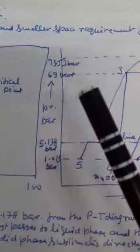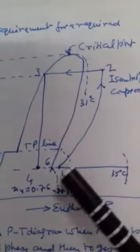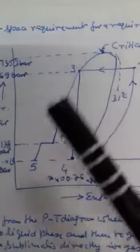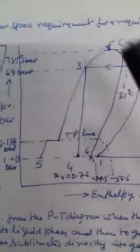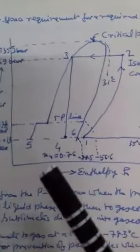See the curve: 4 is this one, 5 is this one. So this is the graph between pressure and enthalpy for CO2.